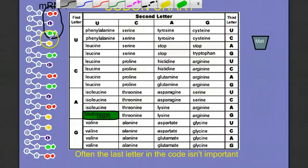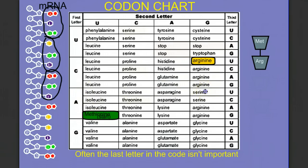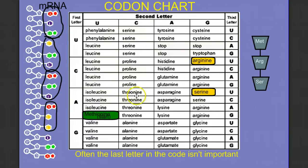Then we go to the next codon, CGU. Finding C on the chart, going across to G and then U, we find arginine. Continuing to the next codon, AGU — using the codon chart, AGU is serine. And then the next one is ACC — looking that up on the codon chart, ACC is threonine.